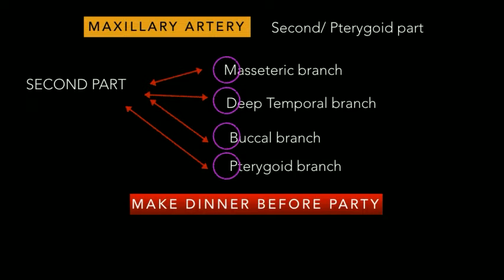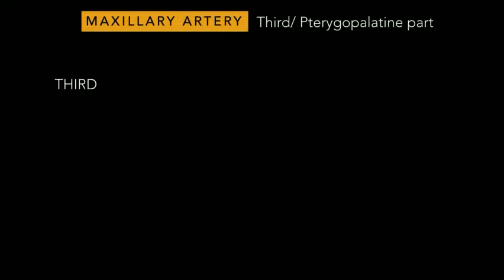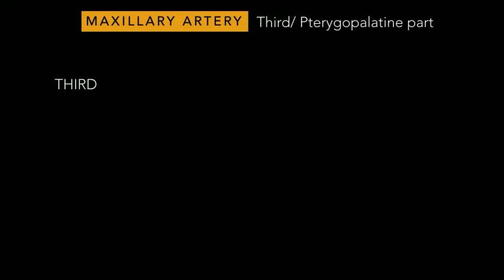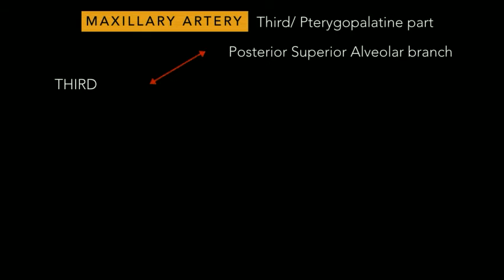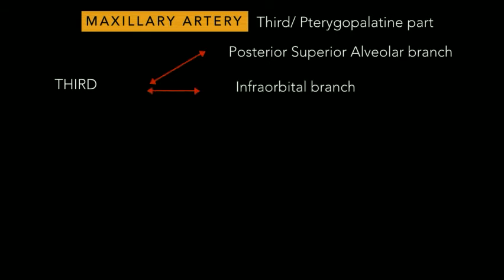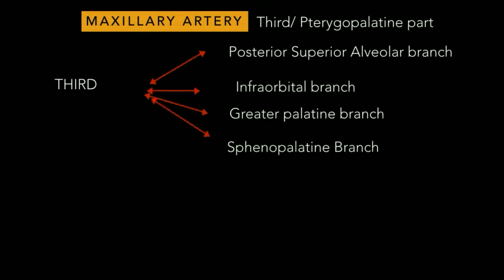After this, the maxillary artery enters its third part — the pterygopalatine part — which passes between the two heads of the lateral pterygoid through the pterygomaxillary fissure to enter the pterygopalatine fossa, where it lies in front of the pterygopalatine ganglion and gives out these branches: the posterior superior alveolar branch, infraorbital branch, greater palatine branch, sphenopalatine branch, the pharyngeal branch, and the artery to the pterygoid canal.